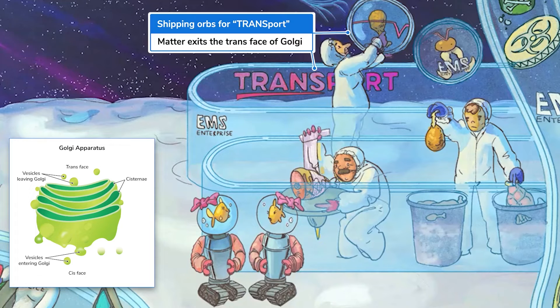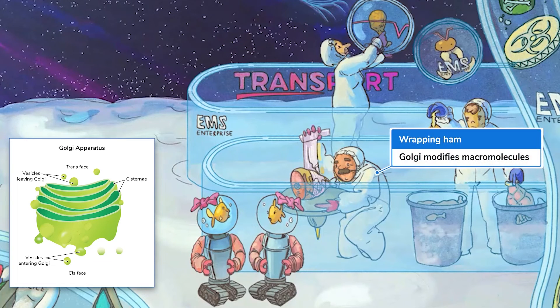So what kind of magic happens between the cis and trans faces? For starters, the Golgi is involved in the modification of molecules, like altering proteins or membrane phospholipids. Modification typically involves the addition of extra chemicals like sulfates, phosphates, or carbs. Here in the Golgi processing center, a ham is being wrapped — modified, if you will — for future transport.